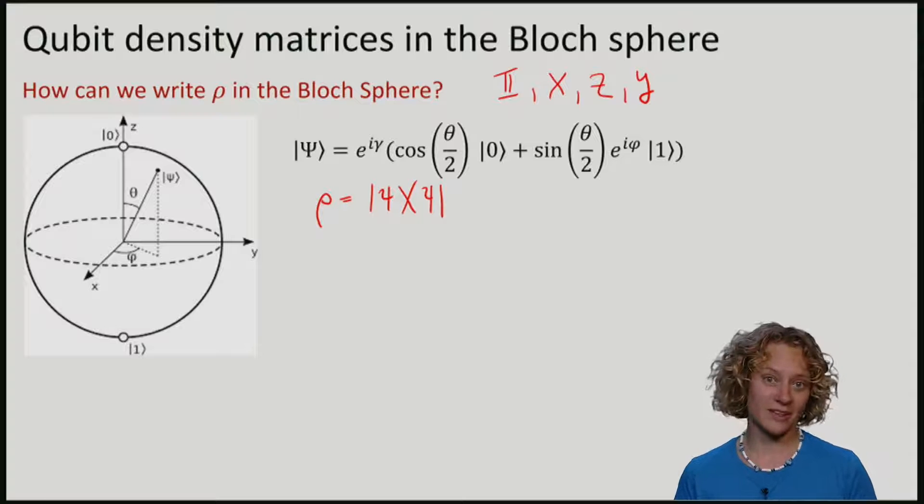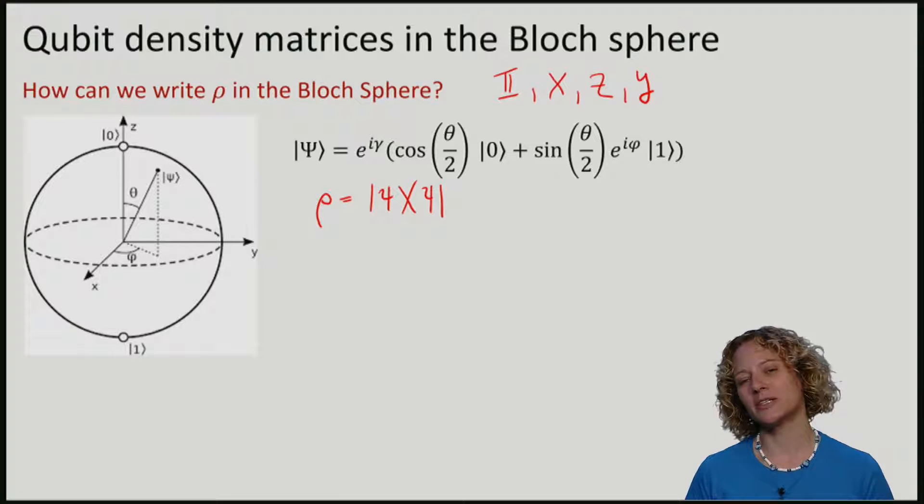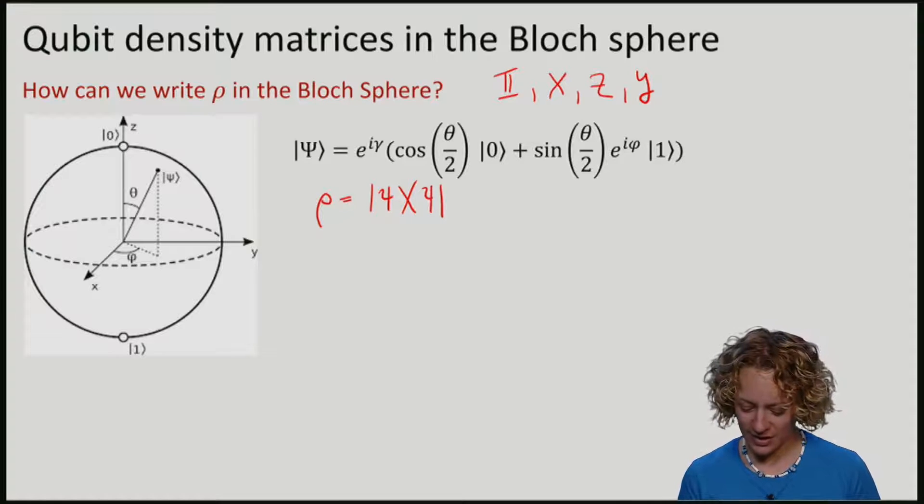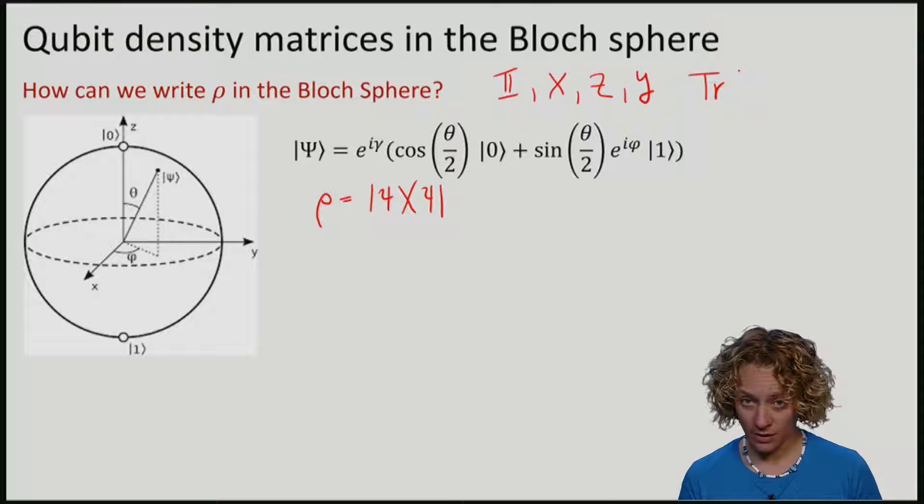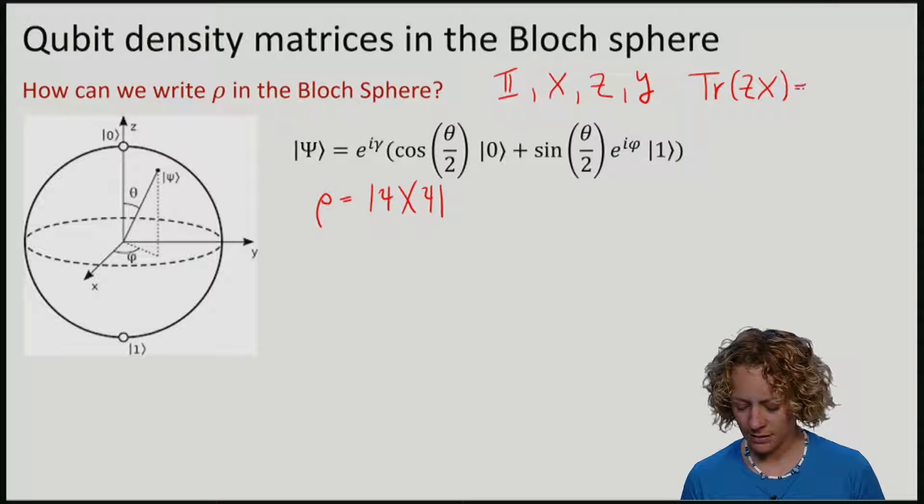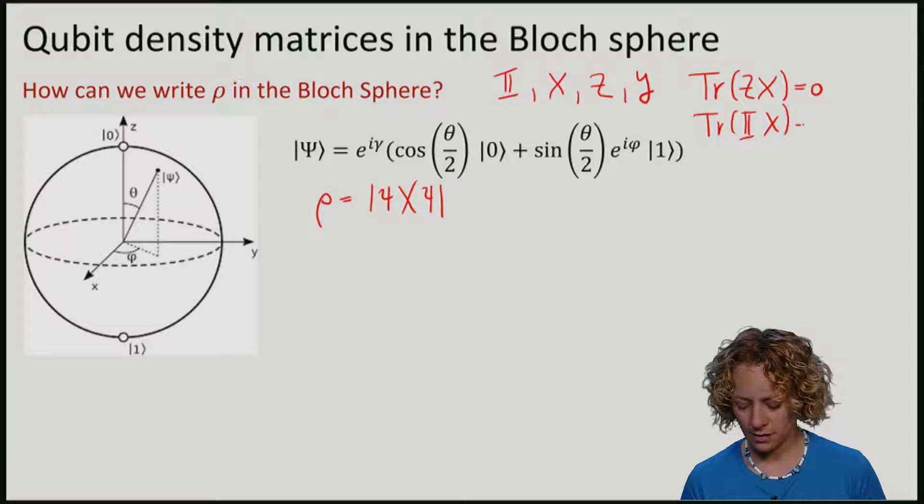Pauli matrices are orthogonal under what is called the Hilbert-Schmidt inner product. This means, for example, that the trace of Z times X is 0 and also the trace of the identity with X is 0.